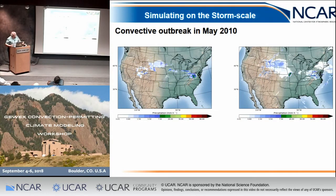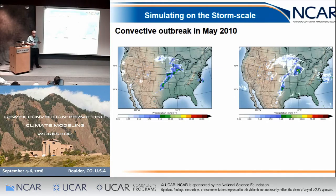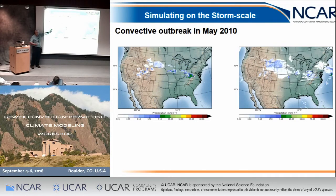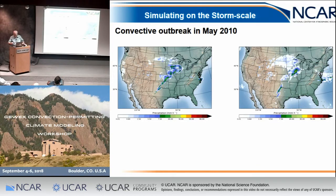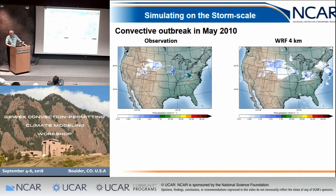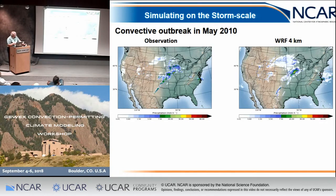Here's a movie — one side is radar data and one is from the model. How many think the left is the model? The model takes convection off the coast, which the radar does not. But what's impressive is how well the two datasets agree — the model is doing a really good job on these mesoscale structures.